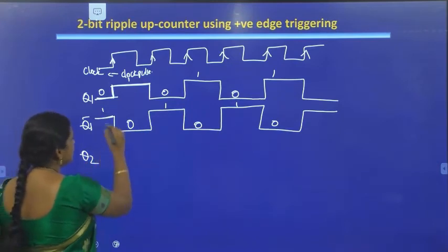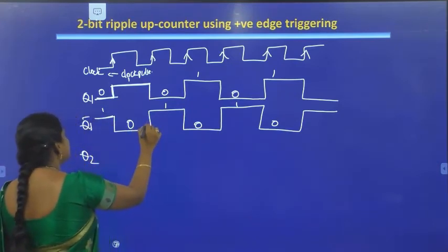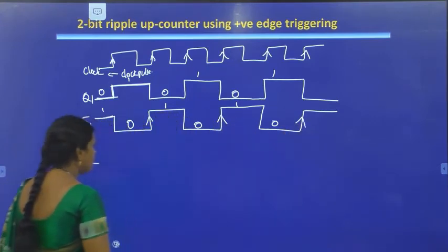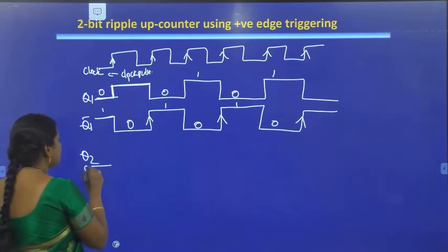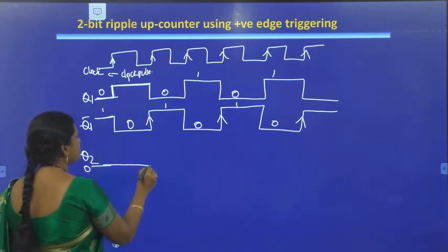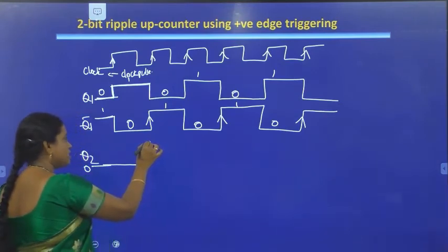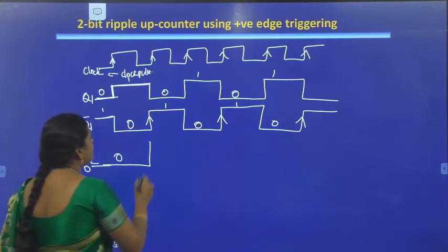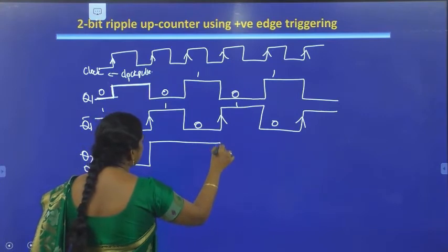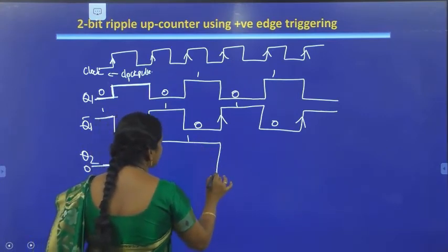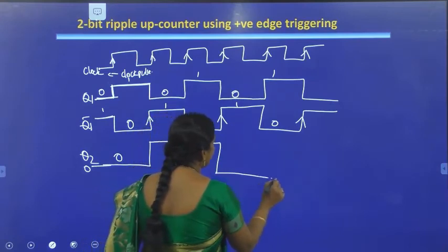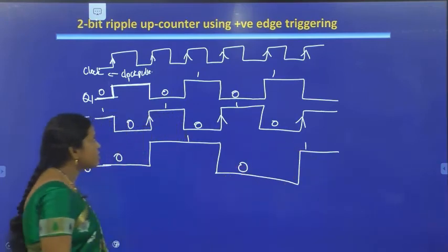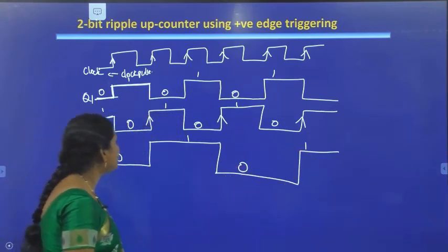Taking the rising edges of Q1 bar, we derive Q2. Q2 starts at 0, remains in the same state until it sees a rising edge of Q1 bar, then changes state. Q2 follows: 0, 0, 1, 1 over the four clock pulses.